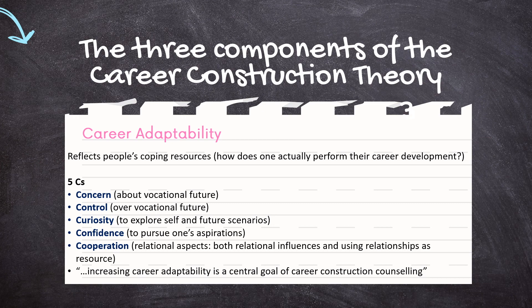Generally speaking, increasing career adaptability is perhaps the central goal of career counseling informed by Savickas' theory. Career counseling informed by his theory and a few other postmodern theories that emerged in the last 15 years or so is referred to as narrative career counseling, which is about facilitating career storytelling. Through this storytelling, people come to understand themselves and their best pathways in context. We will talk more about narrative career counseling in module nine, and the next mini-lecture focuses more briefly on the introduction to career counseling solely informed by Savickas' career construction theory.